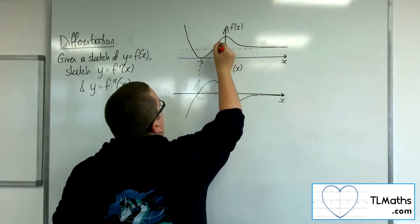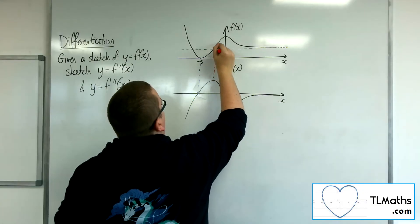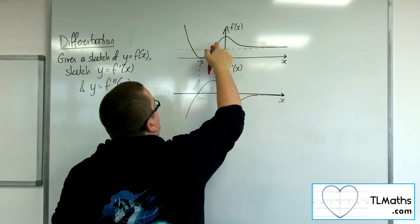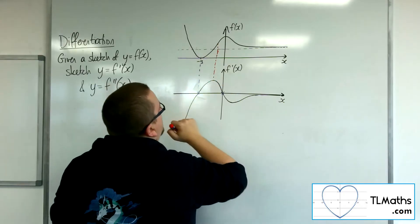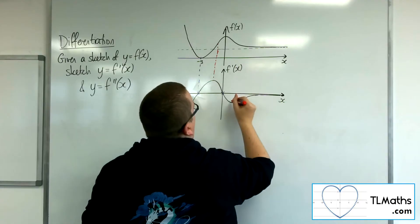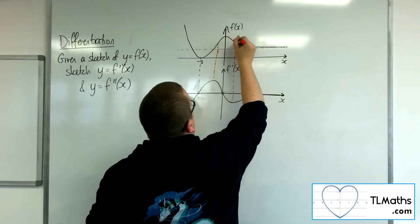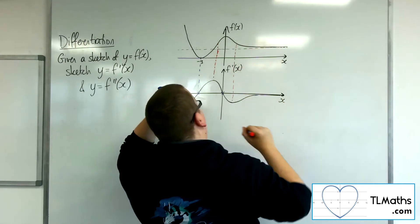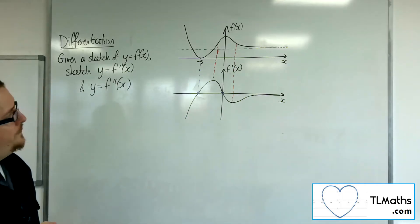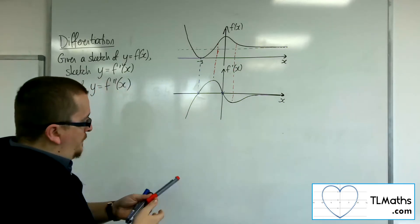There's this point up here matching the maximum gradient before the curve turns — that's its point of inflection. And there's also a point of inflection here, where the curve reaches maximum gradient and then shallows out again. So that's our situation for the gradient function of f.